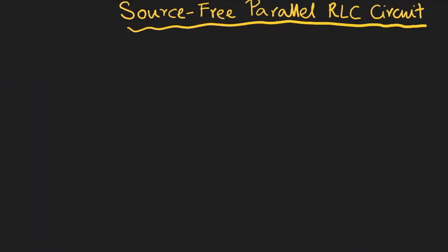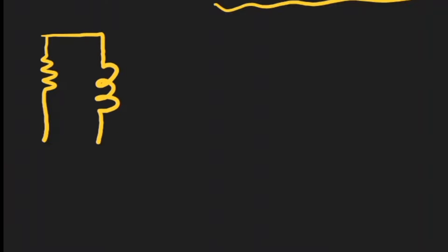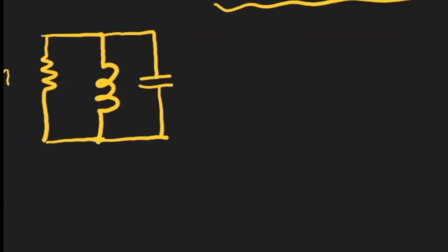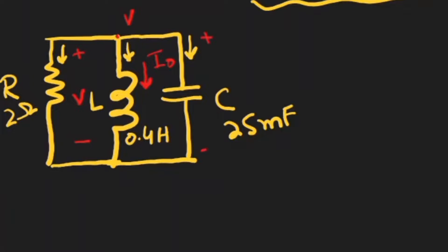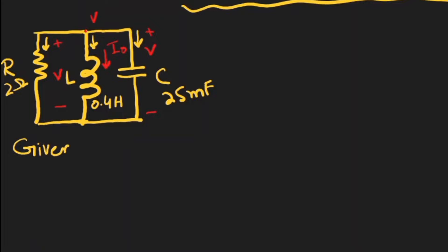Today we are going to discuss a source-free parallel RLC circuit. Here is a resistor, an inductor in parallel with that resistor, and a capacitor — so this is the basic circuit with resistor R, inductor L, and capacitor C, all three in parallel. Here is the direction of current flow. The voltage at this node is equal to V, and the inductor current is denoted by i₀, which is the initial inductor current.